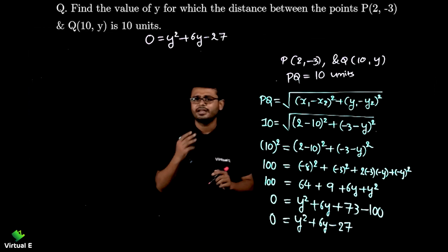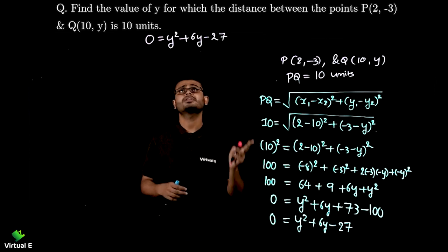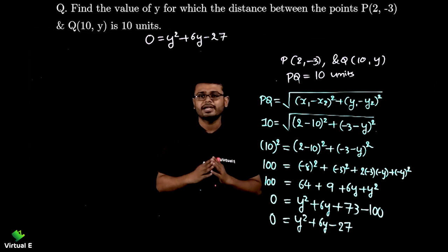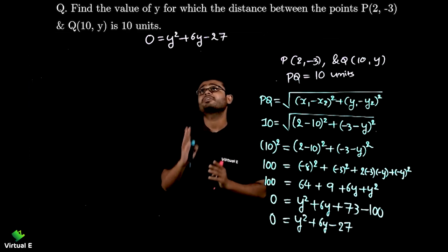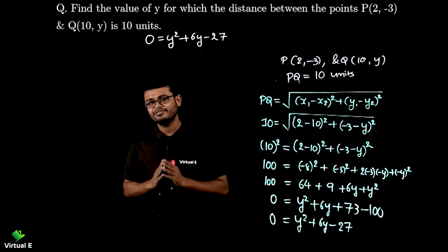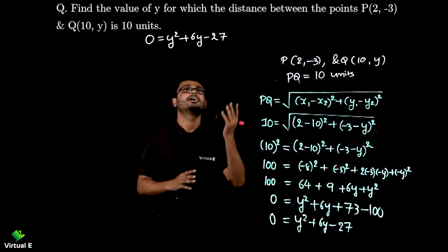So let's write y² + 6y - 27. So we need to solve it. There are three methods. Factorization, quadratic formula or completing a square. Always prefer to try factorization first because it is easy obviously. Let's start.